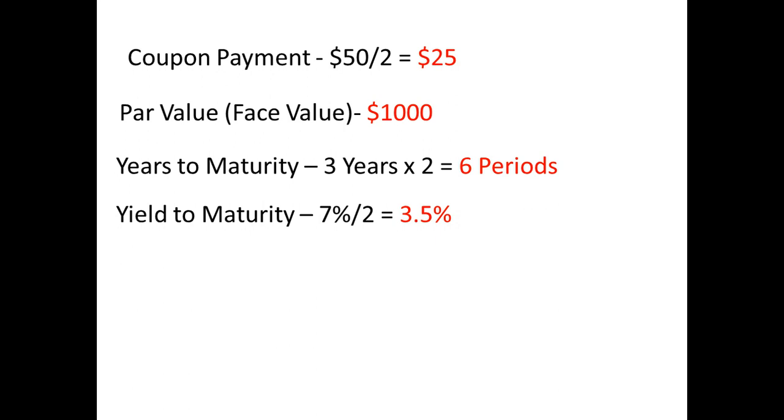The present value of the bond would be calculated as $25 divided by 1.035 plus $25 divided by 1.035 to the 2nd power, plus $25 divided by 1.035 to the 3rd power, and so on until you discounted the par value divided by 1.035 to the 6th power. This gives us a bond price of $946.71.